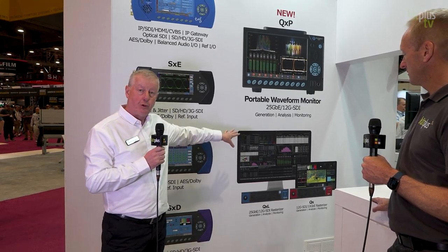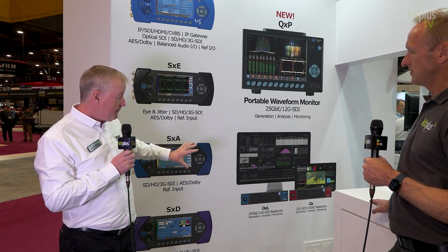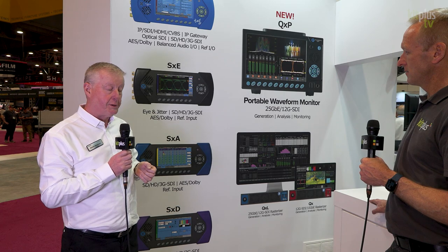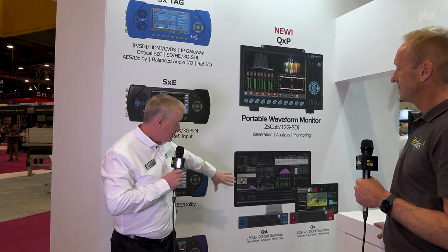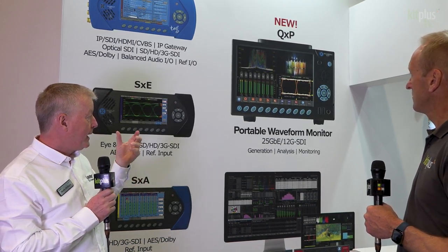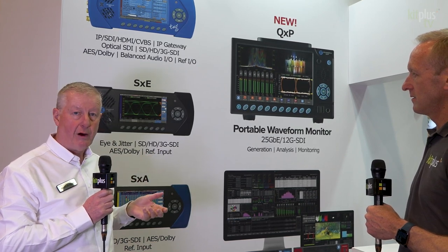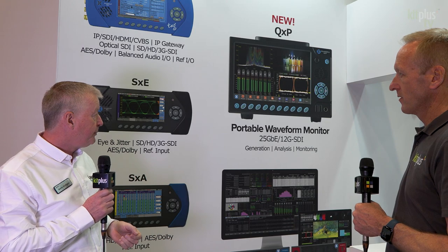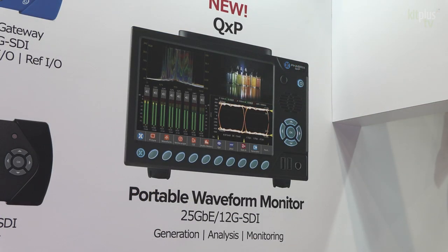These units are rasterizers, so typically there's an HDMI connection to a monitor to view the instrument display. Many people wanted the rasterizer to become more portable, so we've moved on to the QXP — literally the QXL in a portable form factor with touchscreen and button control, and the same 25 gig IP and 12 gig SDI support. On the SDI side, even in America it's predominantly HD, but we can see UHD 4K becoming more prevalent, while bigger facilities are really wanting to move to ST 2110 IP.